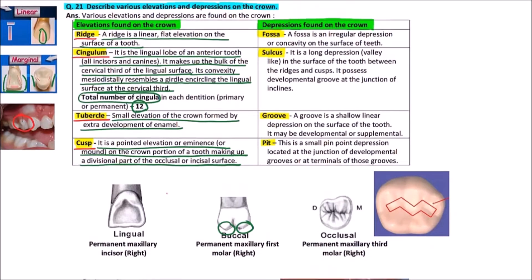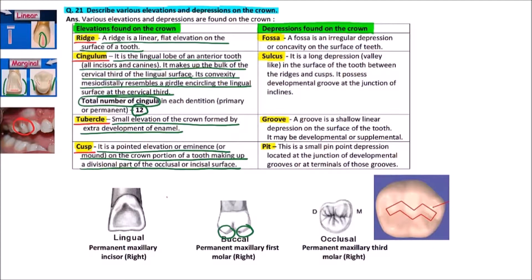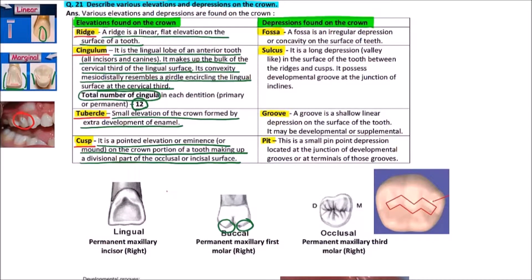Now, the depressions found on the crown. First of all, we'll discuss fossa. A fossa is an irregular depression or concavity on the surface of teeth.